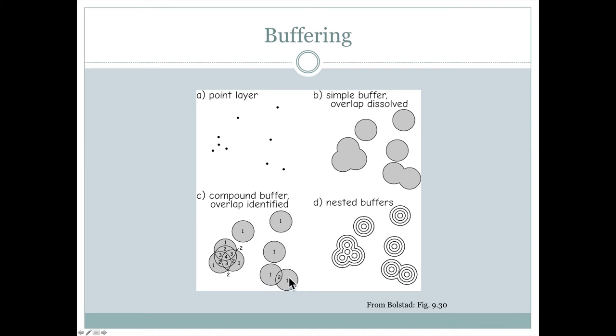So in this case, let's look at this simple example between this point and this point. We might want to know what area is within that buffer distance from both of those features, this area number two here. So if we want to, when we do buffering, we can preserve that information.